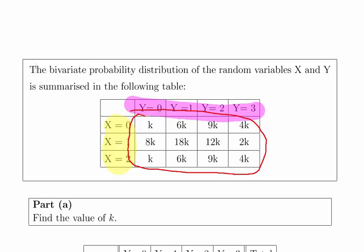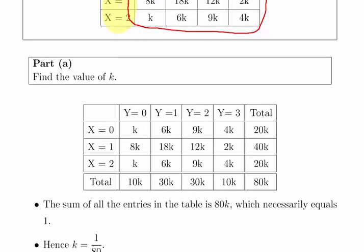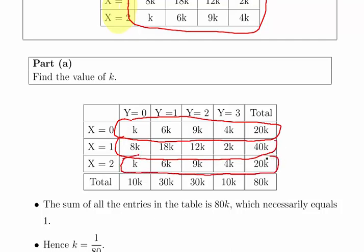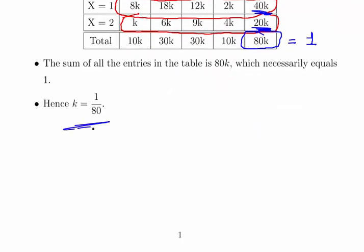The first question asks us to find the value of K. Essentially what we have to do is calculate all the marginal probabilities — add up the rows and columns. We get K plus 6K plus 9K plus 4K, which gives us 20K. Likewise we get 40K and then 20K. Adding all of those up gives 80K. Since 80K must equal 1, K is equal to 1 over 80.